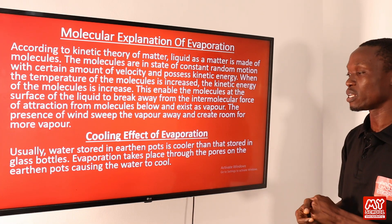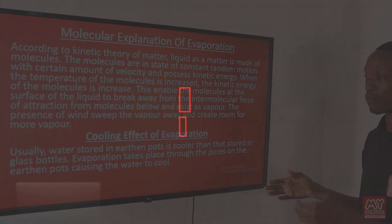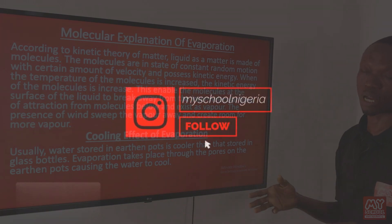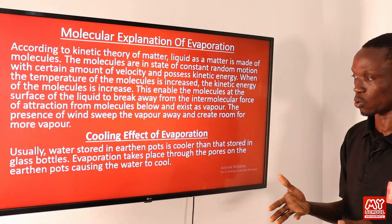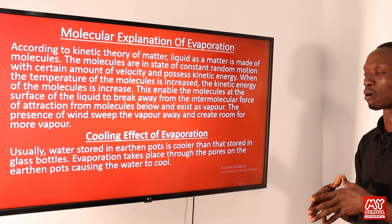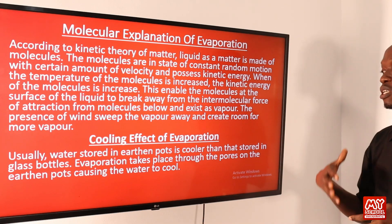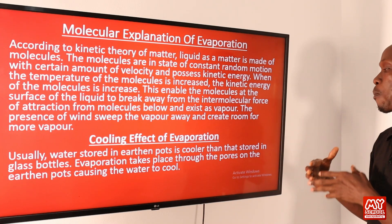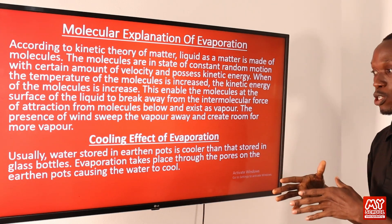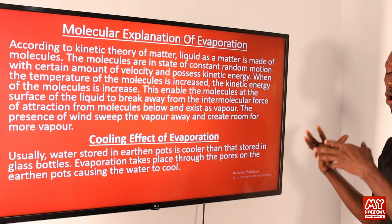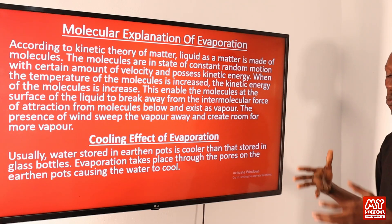Now let's talk about the cooling effect of evaporation as experienced in everyday life. A good example is when you store water in an earthen pot — the water is cooler compared to water stored in a glass bottle. The reason is that evaporation takes place through the pores, which are tiny holes on the surface of the earthen pot, causing the water inside to cool.